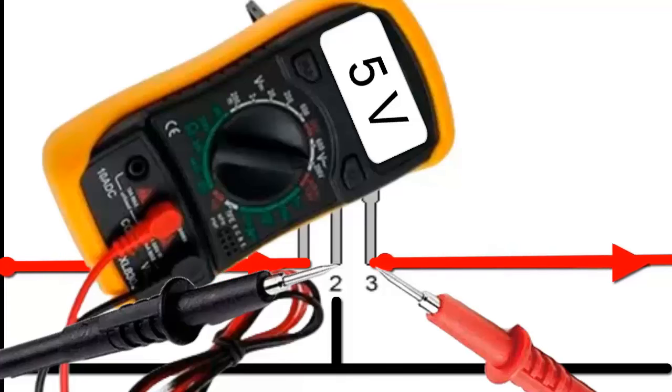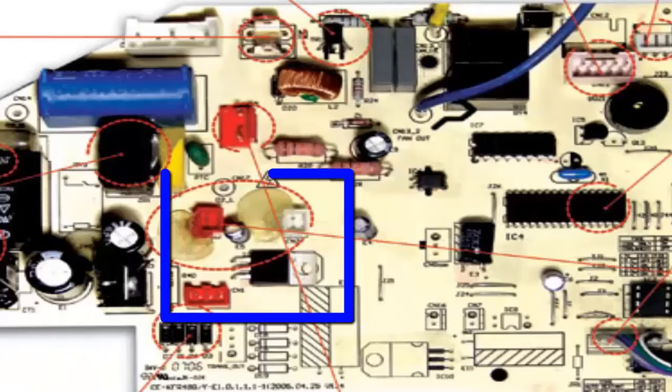The output voltage should be close to 5 volts. If it is significantly different, the regulator may be damaged.